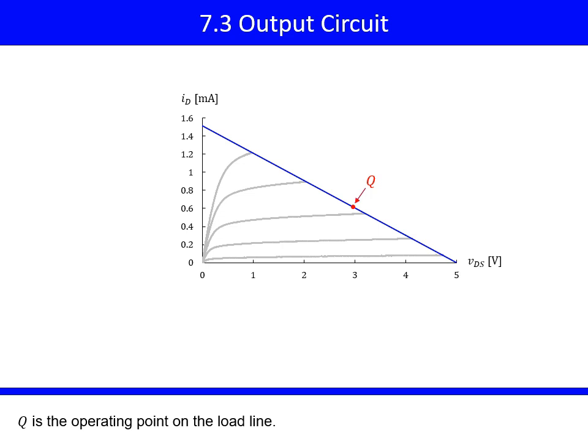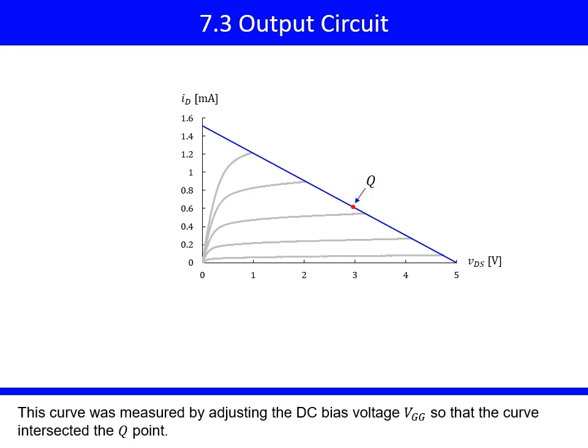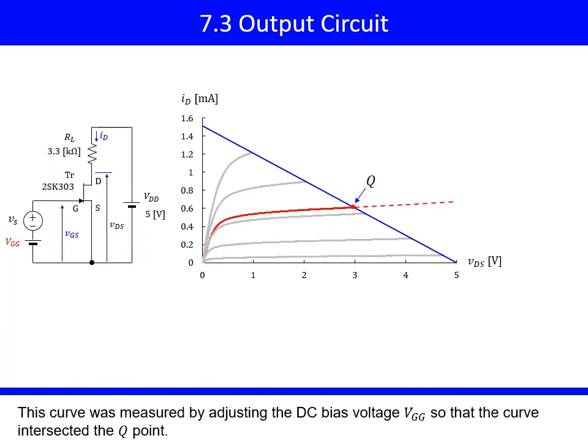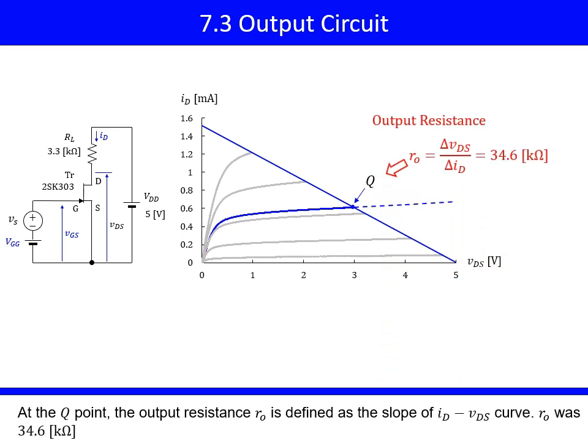Q is the operating point on the load line. This curve was measured by adjusting the DC bias voltage VGG so that the curve intersected the Q point. At the Q point, the output resistance RO is defined as the slope of the ID-VDS curve. RO was 34.6 kilo-ohms.